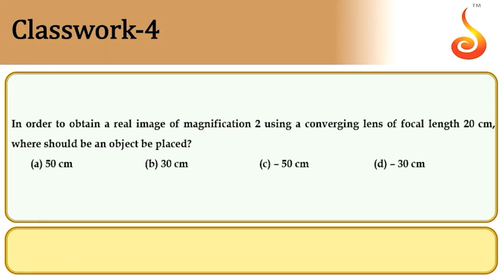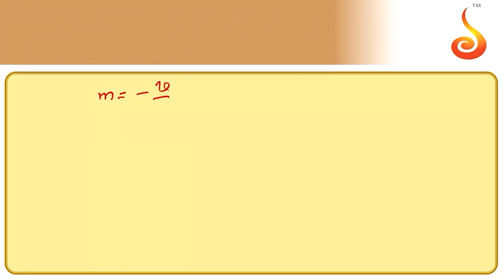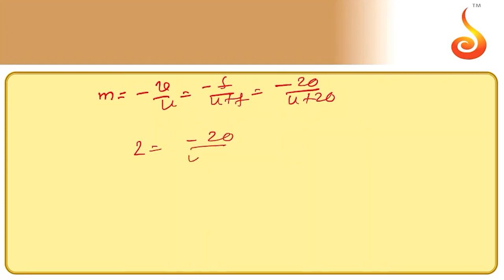Example 4: To obtain a real image of magnification 2 using a converging lens of focal length 20 cm, we use m = -f/(u + f), giving 2 = -20/(u + 20), which yields u = -30 cm. The object should be placed at a distance of 30 cm from the lens.